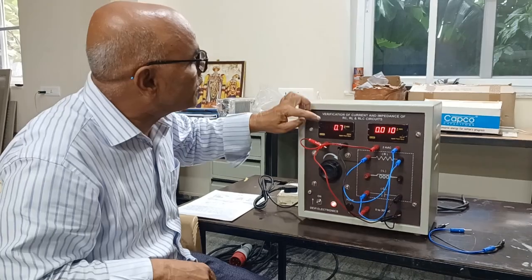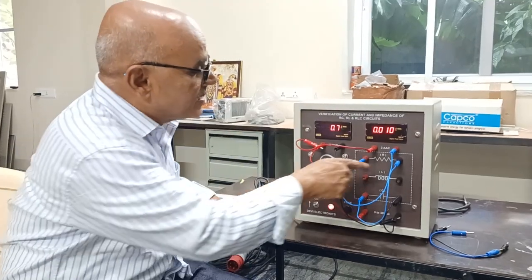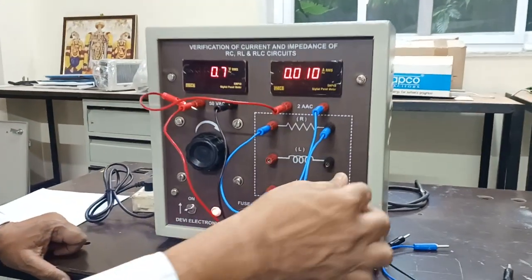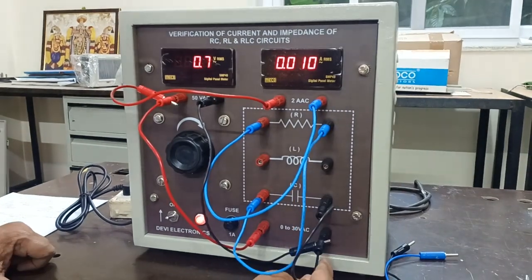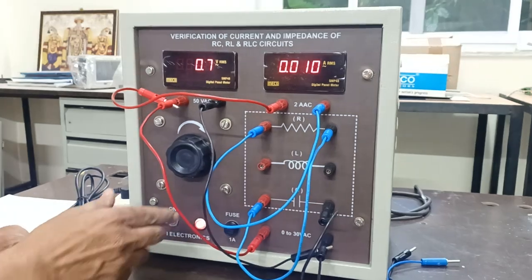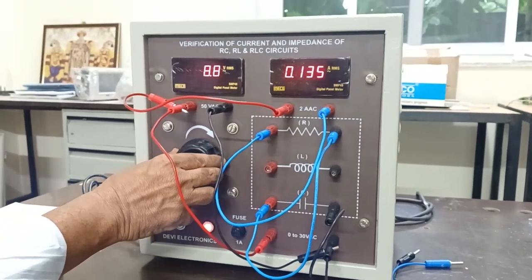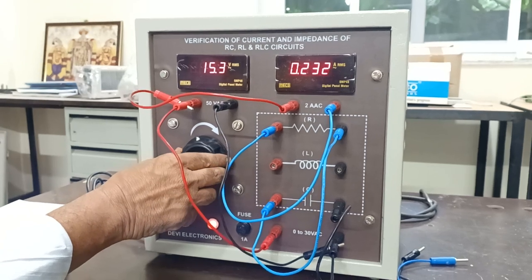Now we are going to perform RC combination. Instead of L, I have connected R another end to C starting end, another end of the C connected to my neutral. Again in the same manner, we will be applying 30 volts. And then we need to write down the current.